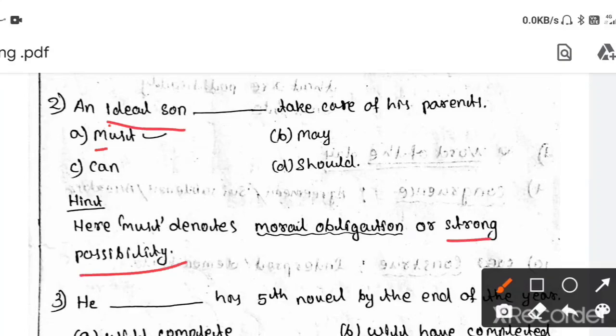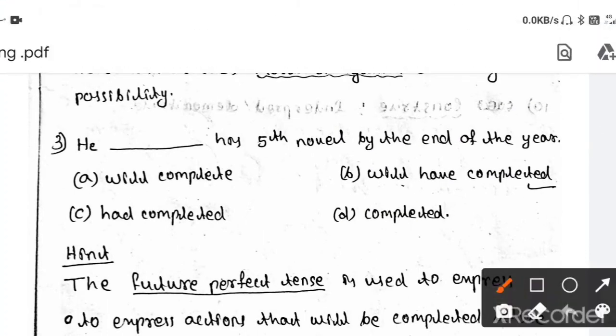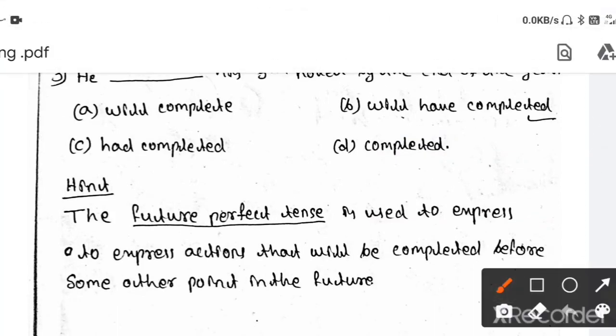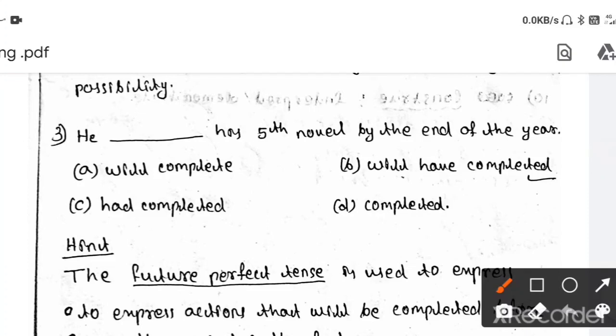Then question three. He dash his fifth novel by the end of the year. By the end of the year, this point to be noted. Then your answer is will have completed. The hint is: the future perfect tense is used to express an action that will have completed before some other point in the future. Here in future, the point will be the end of the year. That's why it is taken as will have completed.